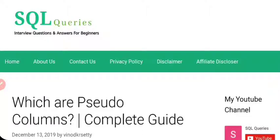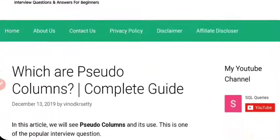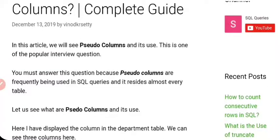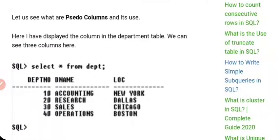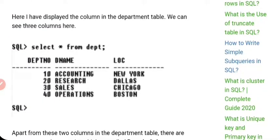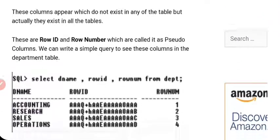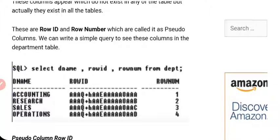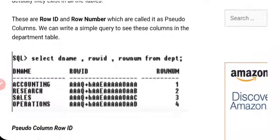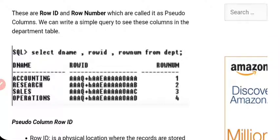Here we'll see what pseudo columns are in SQL. I'm going to consider the department table, which has four rows and three columns. Apart from these three columns — department number, department name, and location — there are two more hidden columns in the department table. These columns are called pseudo columns and they exist in every table. You can write a SQL like: SELECT department_name, ROWID, and ROWNUM FROM department to see what exactly ROWNUM and ROWID are.